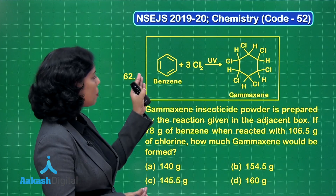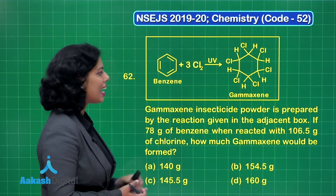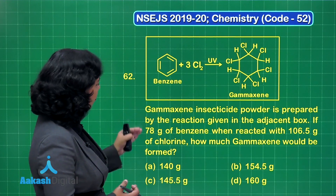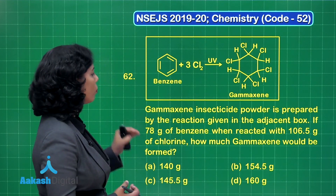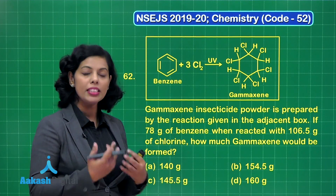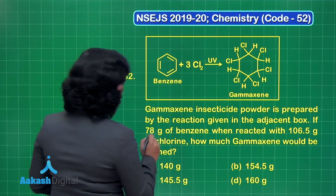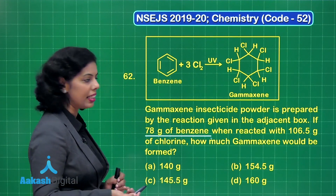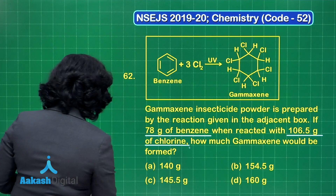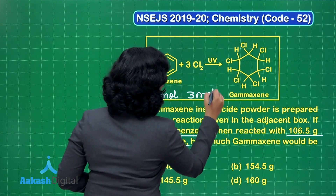In question 62, benzene is reacting with chlorine to give gammexene. The question reads: gammexene insecticide powder is prepared by the reaction given in the adjacent box. If 78 grams of benzene reacts with 106.5 grams of chlorine, how much gammexene would be formed? This question is based on stoichiometry. In this reaction, 1 mole of benzene reacts with 3 moles of chlorine.